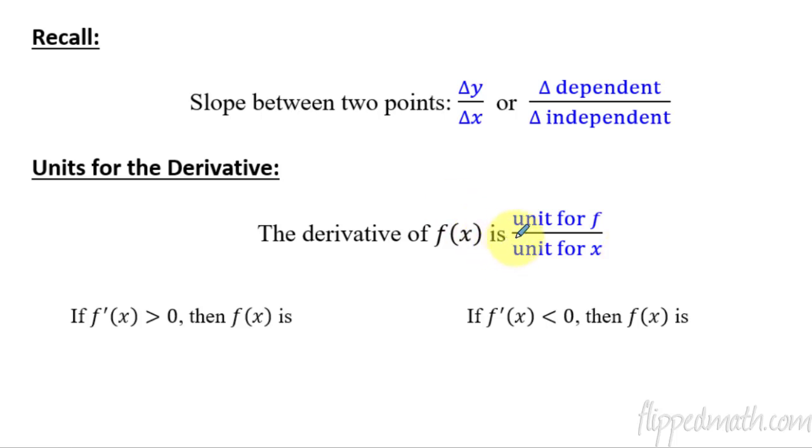So if you had something like h of t, like the height with respect to time, then you would be saying that if you figured out the derivative then your units would have to be the units for h divided by the units for t. Alright, so it's always this thing here divided by the input value which in this case would be the x.